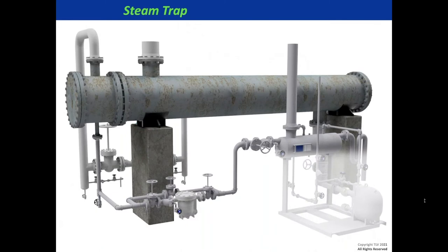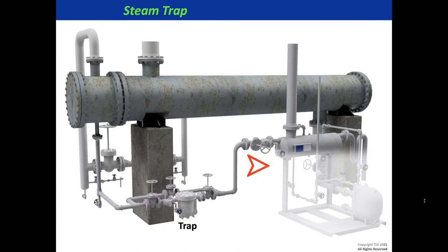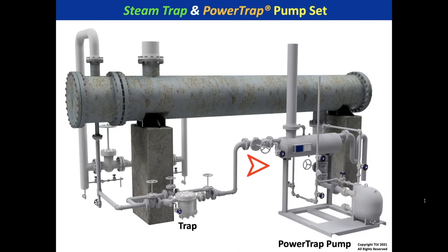For an existing installation where the trap can't go overhead, you may have enough pressure to lift condensate a few feet into a receiver. Install just a pump — not a pump trap, since you already have a trap — and deal with the flash steam using something like a vent condenser. This is one relatively easy alternative to install on existing systems.